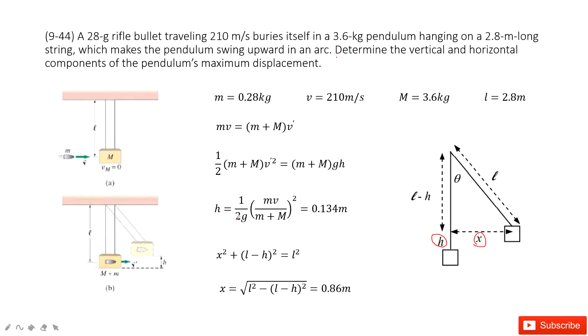Finding h is straightforward — we combine the two equations to get the function for h. Now to find x, we look at this triangle.